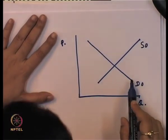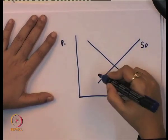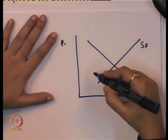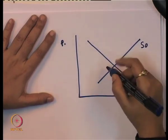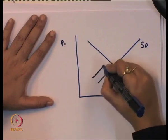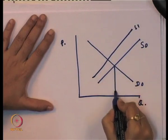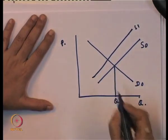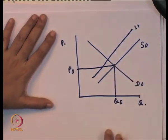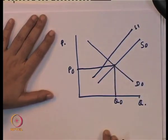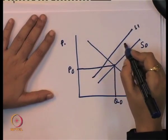D0 is the demand curve and S0 is the supply curve. There is an imposition of tax, and the imposition of tax will be represented through the decrease in the supply, which leads to a decrease in supply from S0 to S1. This is the equilibrium quantity and this is the equilibrium price. There is imposition of tax that leads to a change in the supply from S0 to S1.